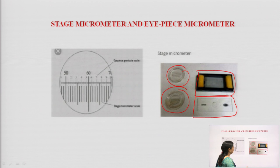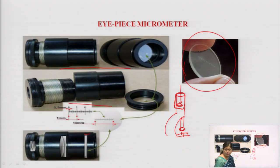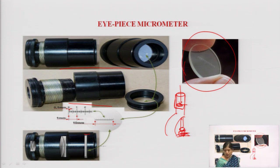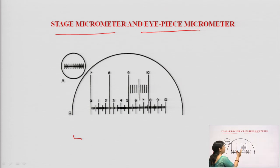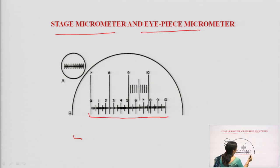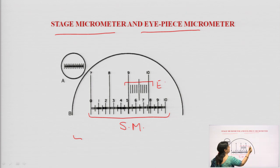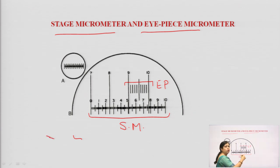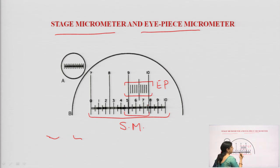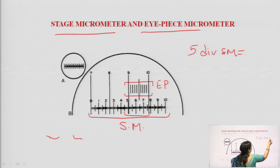After placing the eyepiece micrometer, we also use the stage micrometer, placed just below the objective lens. Both have their own scales and measurements. We superimpose these two scales and do the calibration by counting the number of divisions of the eyepiece micrometer matching with the stage micrometer. For example, if five divisions of the stage micrometer coincide with seven divisions of the eyepiece micrometer, we have that relationship.